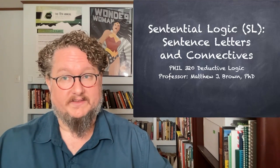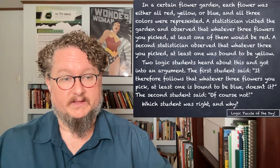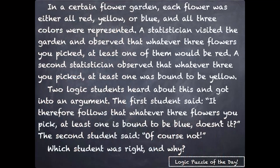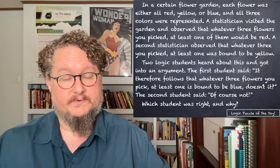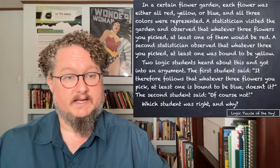Before we get into it, I want to start with a little logic puzzle of the day. In a certain flower garden, each flower was either all red, yellow, or blue, and all three colors were represented. A statistician observed that whatever three flowers you picked, at least one would be red. A second statistician observed that whatever three you picked, at least one was bound to be yellow. Two logic students heard about this and got into an argument. The first said it therefore follows that whatever three flowers you pick, at least one is bound to be blue. The second student said, of course not. Which student was right and why? Think about that puzzle as we go through our lecture today and I'll come back to it at the end.